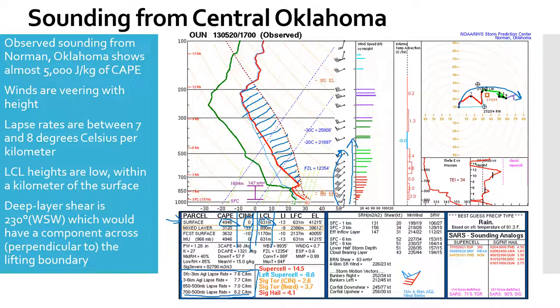One other thing we can look at is our deep layer shear, which is about 230 degrees or from the west-southwest. If we imagine that our shear is coming from the west-southwest, remember how our fronts were oriented across the central United States — that means most of our shear value is going to be perpendicular or across our lifting mechanism. And that's going to lead to more discrete convection or supercell type convection. This is probably going to be more of a discrete supercell event as opposed to a linear event, and that means there's an increased risk for tornadoes and strong hail.